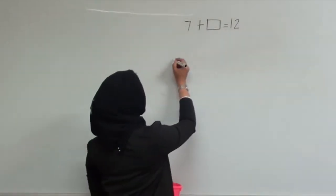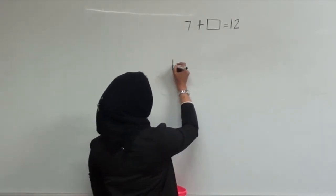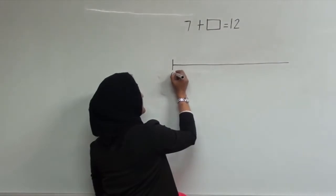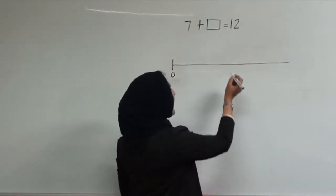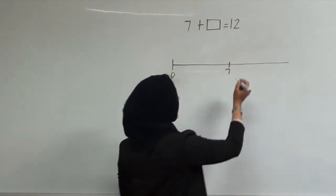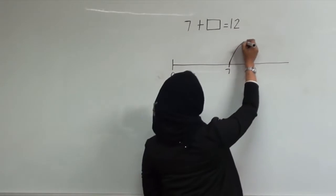I'm going to show you how this would look on a number line. So here's my number line starting at 0. I had 7 cubes in my pot, which I started off with. I added some more.